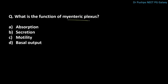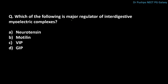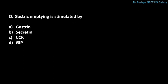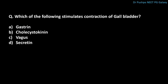What is the function of the myenteric plexus? The correct answer is motility. Which of the following is the major regulator of interdigestive myoelectric complexes? The correct answer is motilin. Gastric emptying is stimulated by gastrin. Which of the following stimulates the contraction of the gallbladder? The correct answer is cholecystokinin.